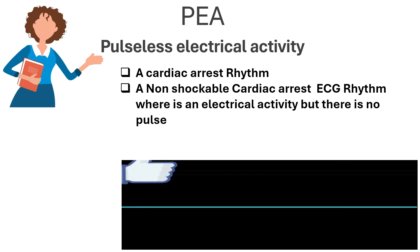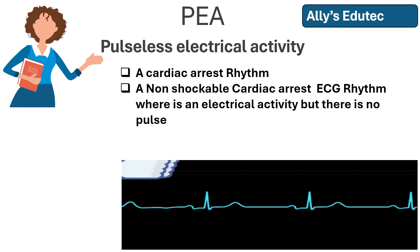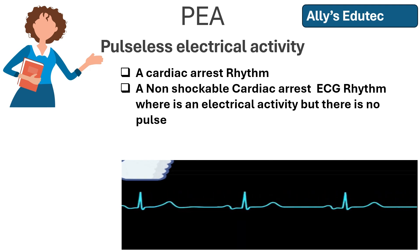Now we will see what is Pulseless Electrical Activity. This is also a non-shockable cardiac arrest rhythm. The difference from Asystole is that there is a specific electrical activity - a specific rhythm is present, either normal sinus rhythm, sinus tachycardia, or sinus bradycardia. There is a definite rhythm you can see on the monitor or defibrillator. Check the pulse immediately. In PEA, there is no definite pulse that can be felt.